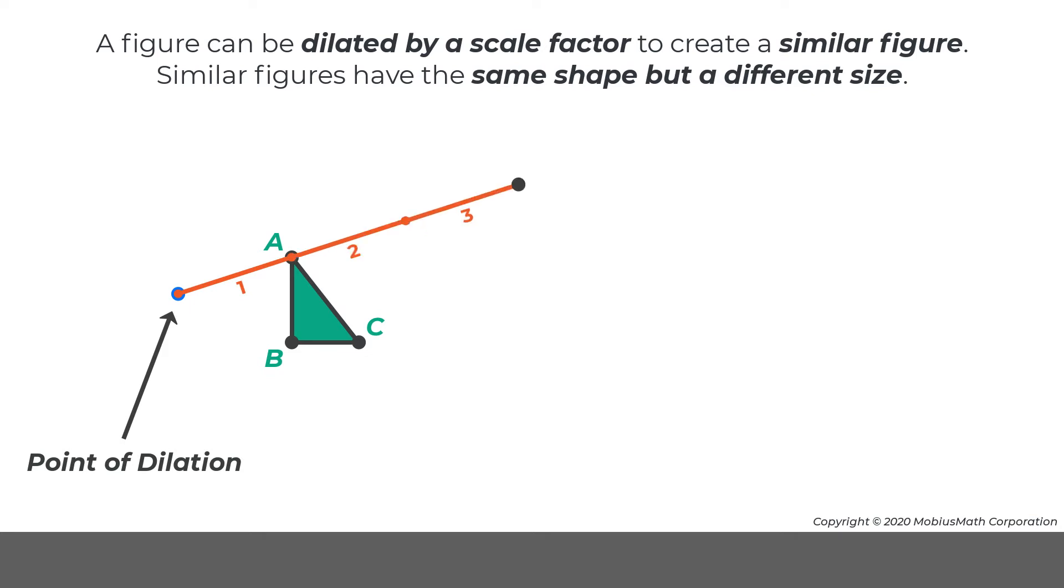Measuring three of these lengths dilates the position of this vertex. Repeating this process for the other two vertices creates triangle A'B'C'.